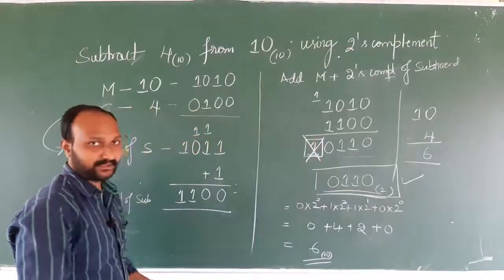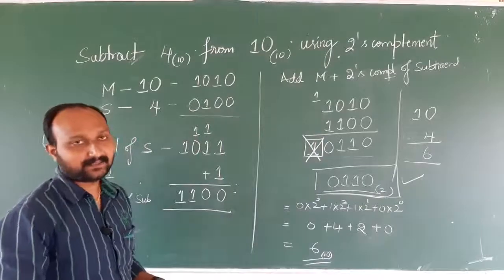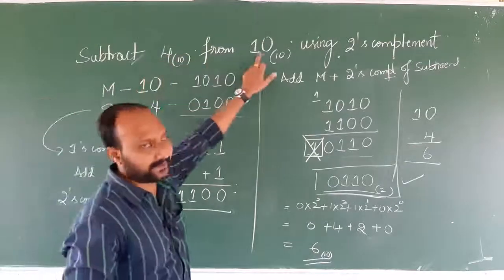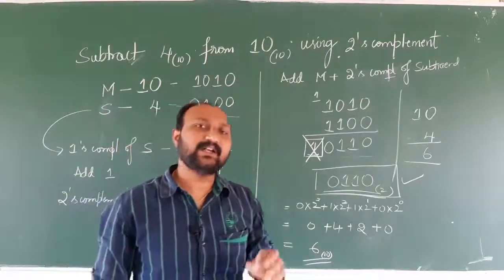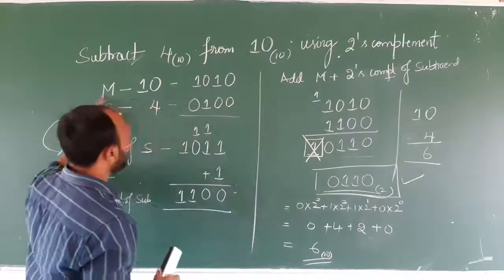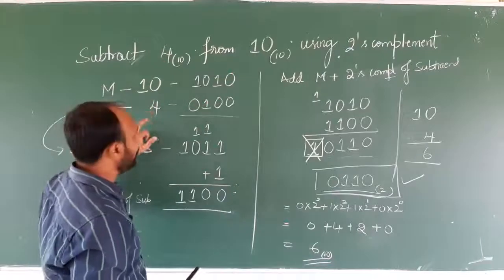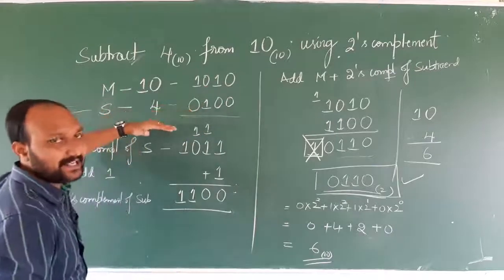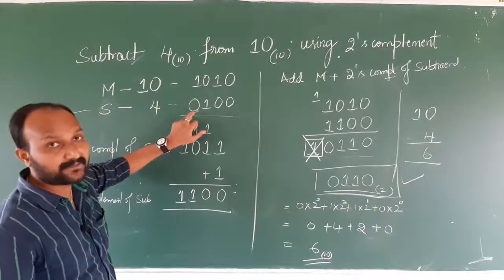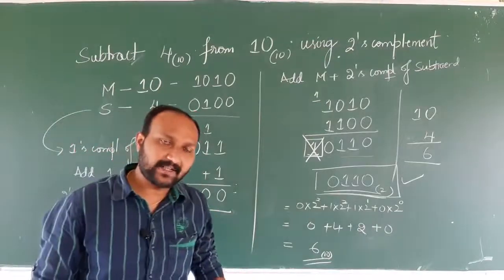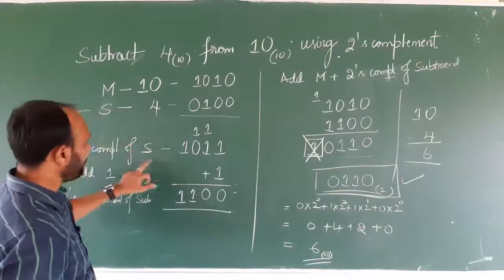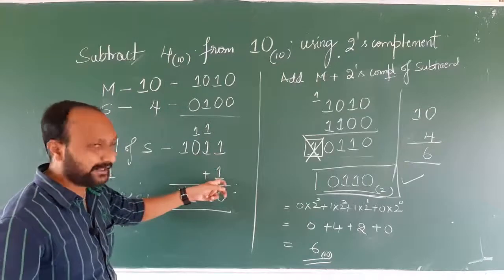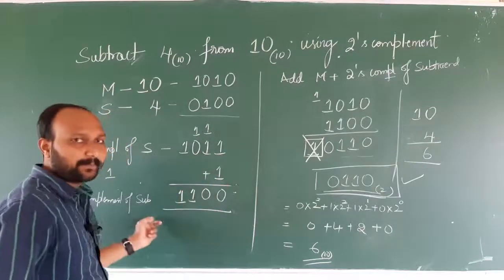Let me rewind the things. If we have been asked to subtract using two's complement method — here we are subtracting 4 from 10 — first we need to decide which is the minuend and which is the subtrahend. The minuend is 10 and the subtrahend is 4. Since they are in base 10, you need to convert them into binary. After conversion, we should perform two's complement of the subtrahend. To find two's complement of the subtrahend, first find the one's complement, then add bit 1 to the rightmost bit to get the two's complement.